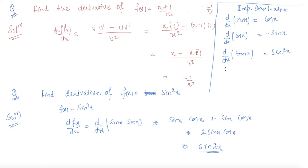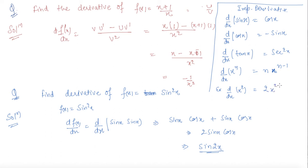For polynomial functions, if we have d/dx of xⁿ, the power comes in front and one is subtracted from the power: n · x^(n−1). For example, d/dx of x² — the power 2 comes forward and 2 minus 1 gives 2x. So the derivative of x² is 2x.